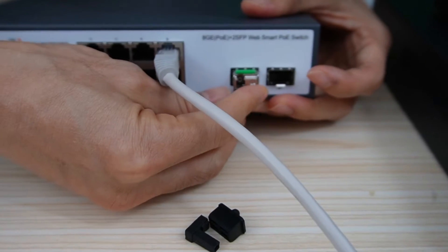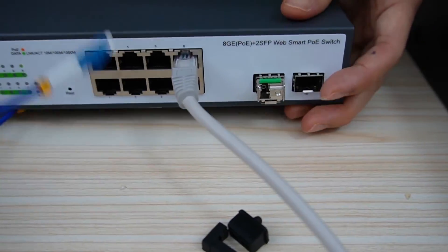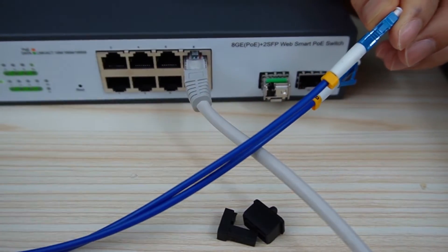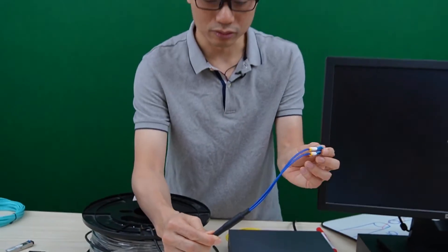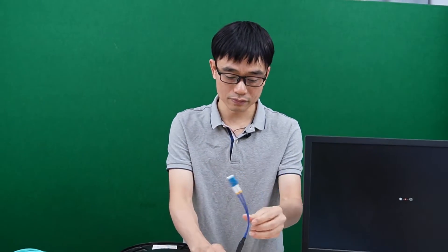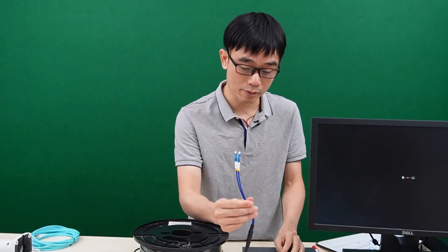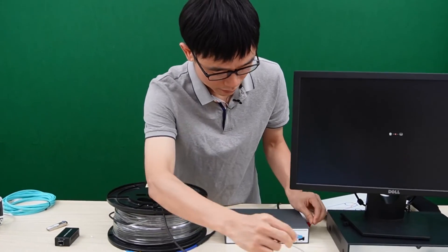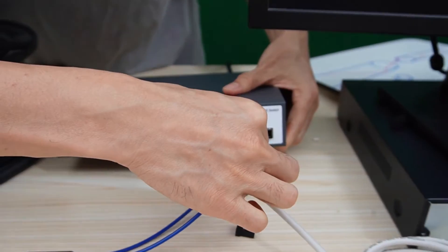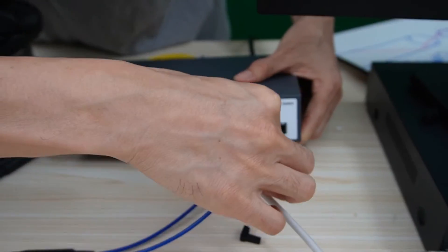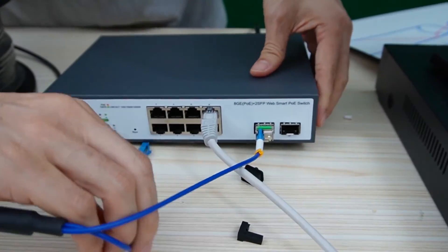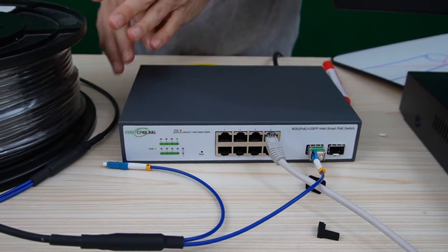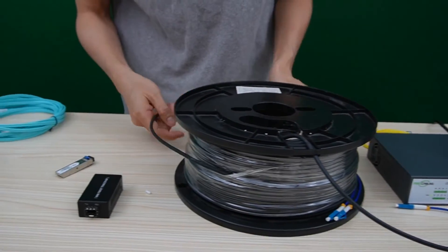I have now installed the SFP transceiver into the PoE switch, which allows me to connect the fiber optic cable. This is a pre-made fiber optic cable, so I don't need to make the connector — it's made in the factory. It's a single-mode fiber optic cable. I will use one fiber optic strand to connect to the SFP transceiver. Now this switch is able to connect the fiber optic cable, so let's move to the second end to find the camera.